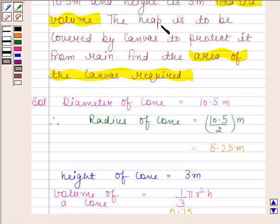Heap is in the form of a cone and we have to cover this cone by a canvas. So clearly this means we have to cover only its rounded surface.